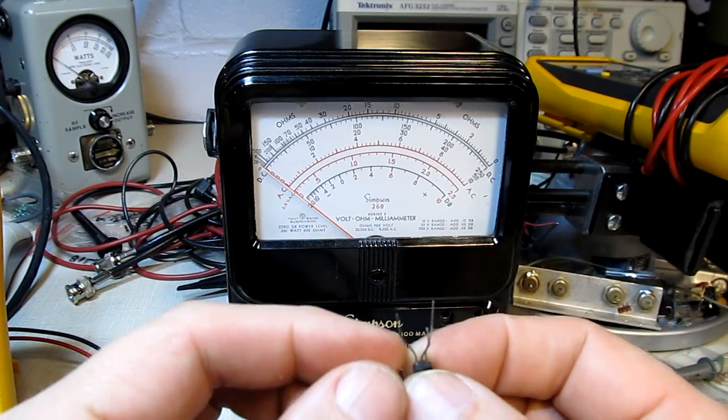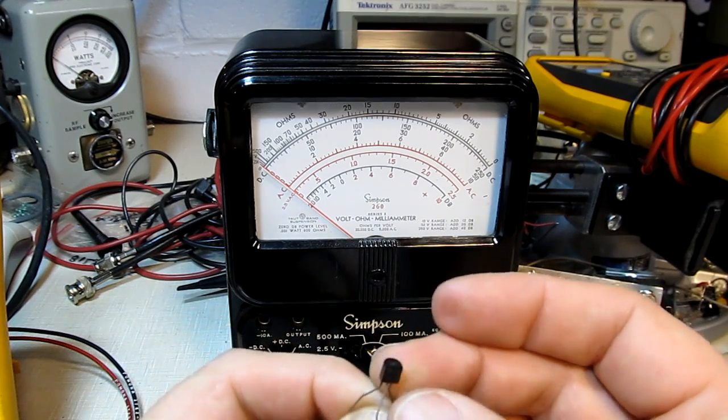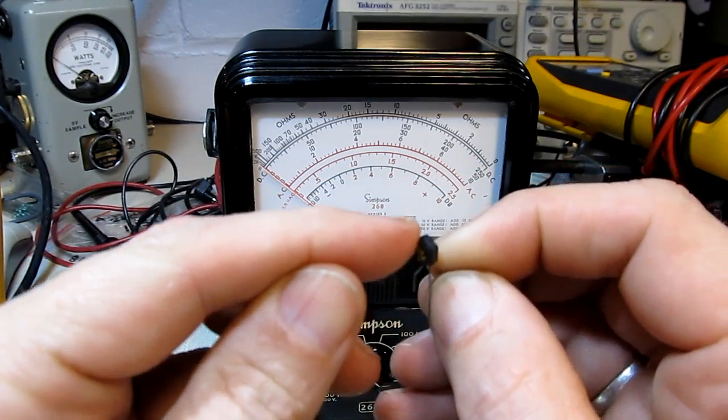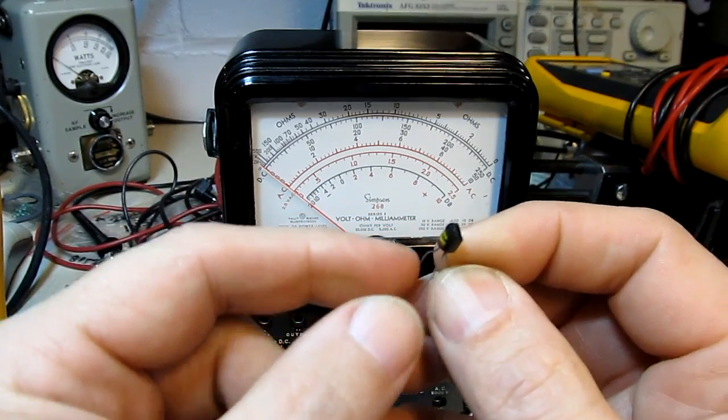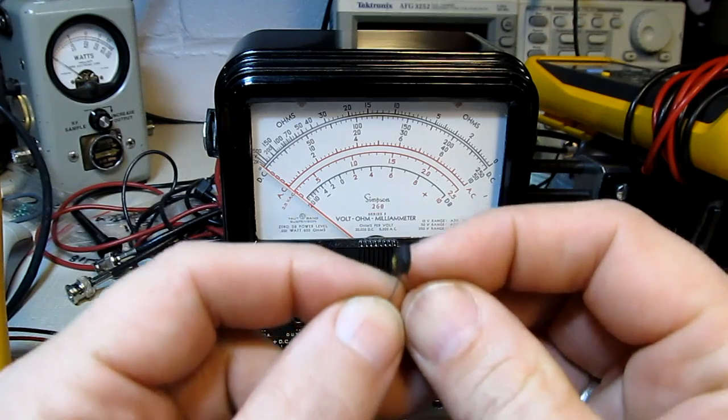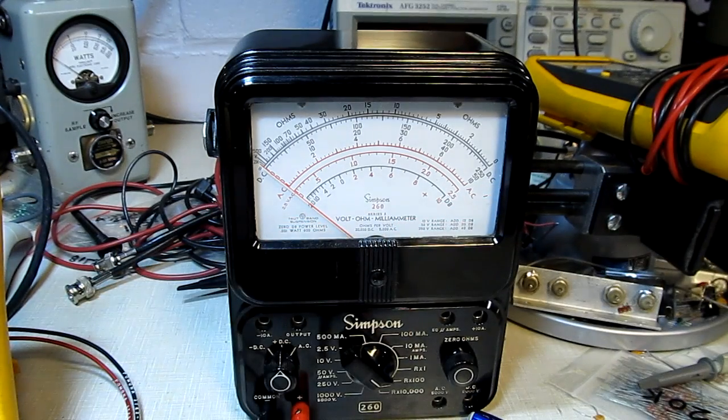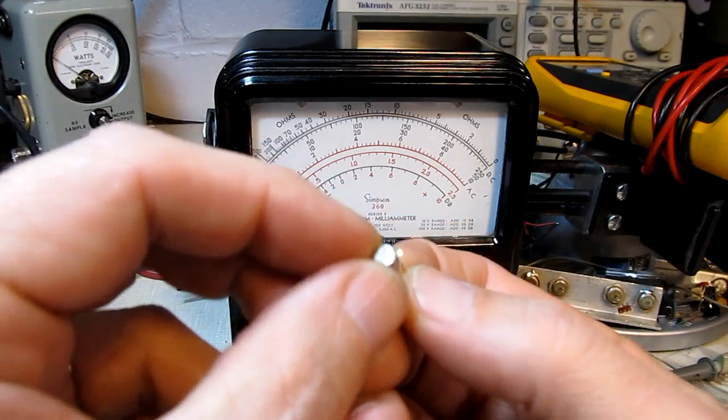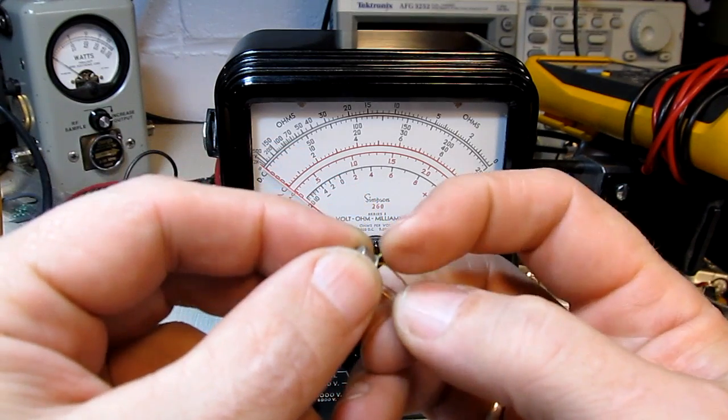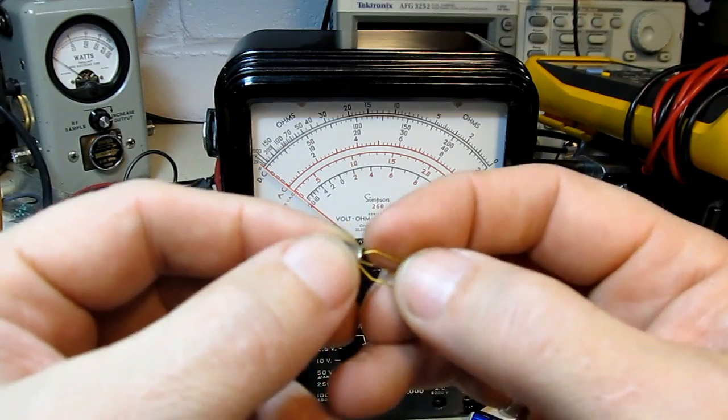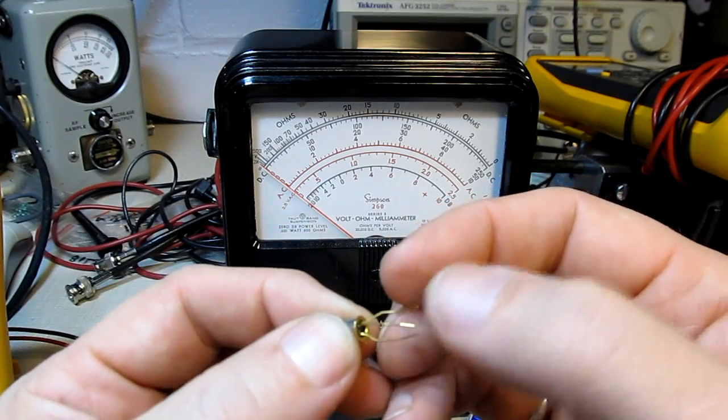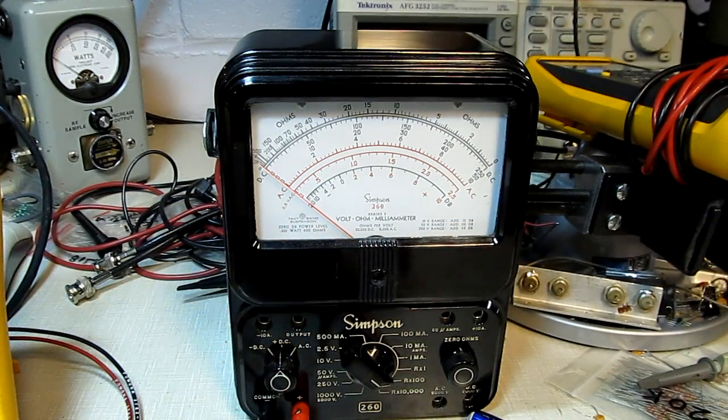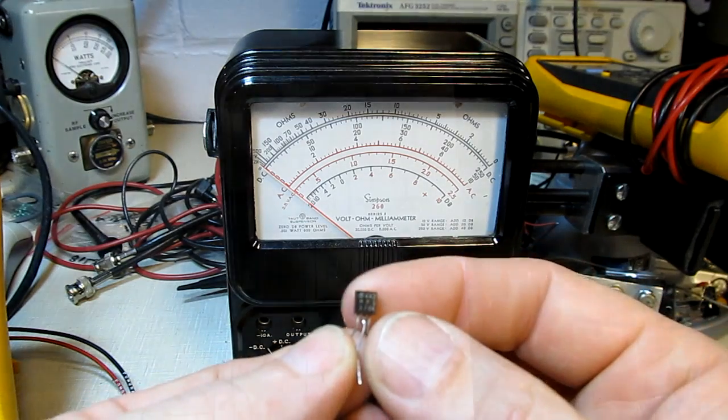Most packages will have a standard pinout for example the TO92s if you look at them kind of in this orientation here with a rounded face of it this way will be collector base emitter in that order but there are exceptions to that rule. Some of the metal can transistors are a little bit easier the metal can will typically have a little tab on it at one portion of the case and that usually designates the emitter and then the next one closest to that is typically the base and then collector opposite the emitter. Again that's generally the case but you really need to check the particular transistor to be sure to get the pinout right.